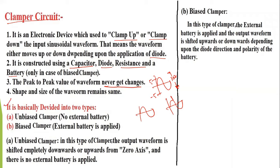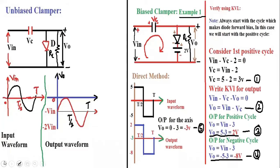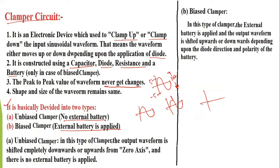There are mainly two types: unbiased clamper with no external DC supply, and biased clamper where external DC supply or battery is applied. In unbiased clamper, the output waveform is shifted completely above or below the zero axis. For example, if input is +5V to -5V, it might shift completely to 0V to -10V.